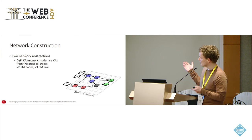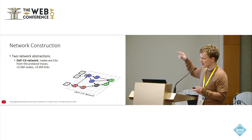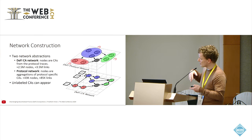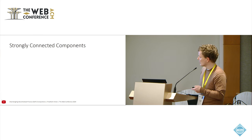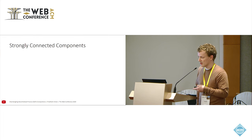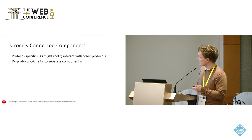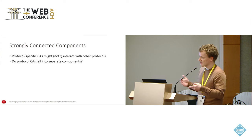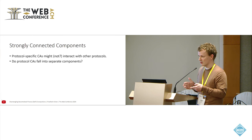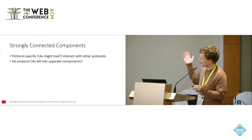From a macroscopic perspective, we looked at two network abstractions. One is the contract account network, visualized here — same color means same protocol. The other is the protocol network, where we aggregate and reduce to a smaller network. We considered employing traditional graph methods, asking whether densely connected sub-networks correspond to single protocols. If so, that would mean protocols are not composed. So we can ask: do contract accounts fall into separate strongly connected components?